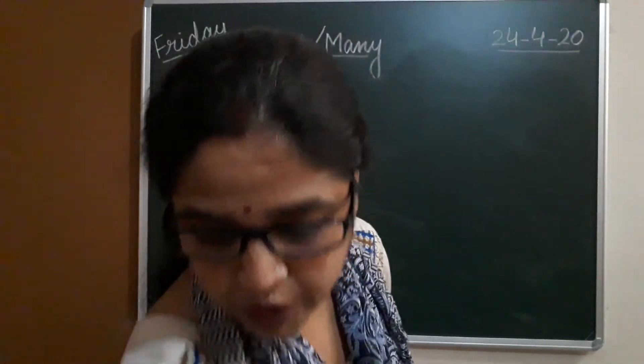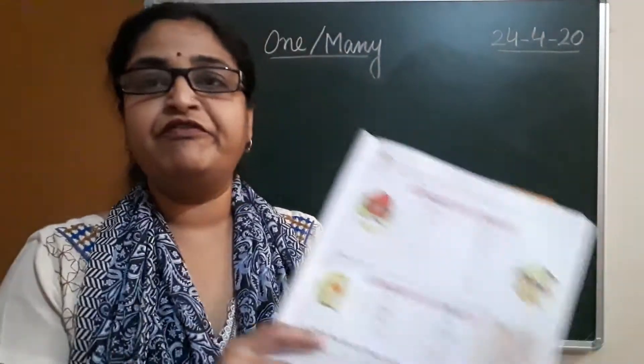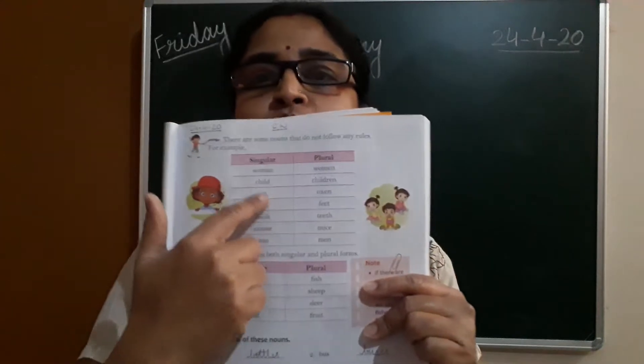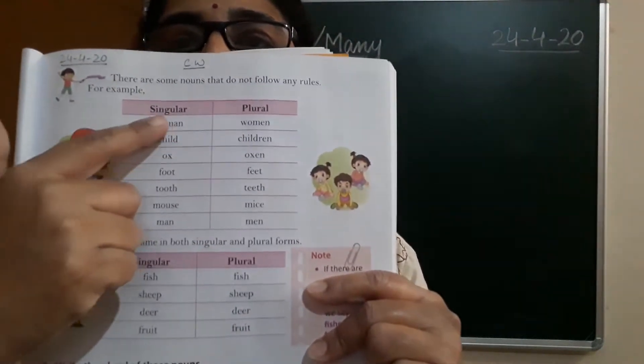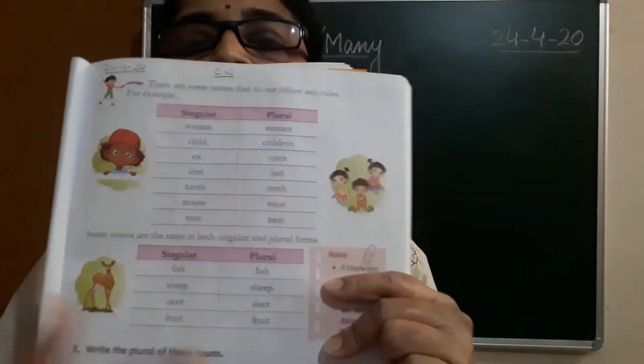See in your book on page number 15, there are two tables given over here.